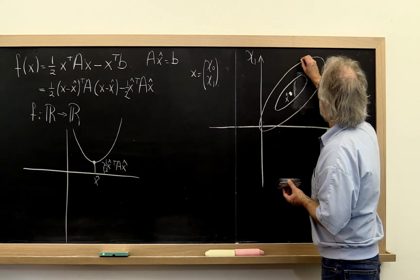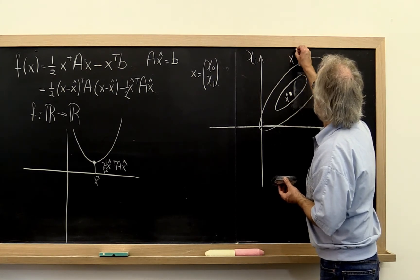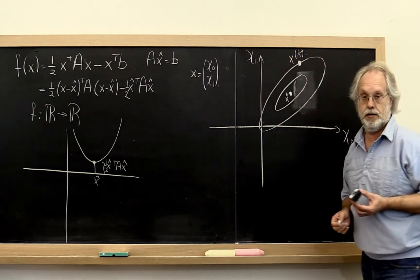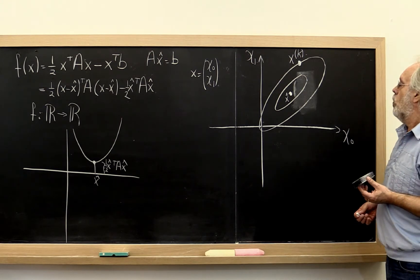And let's say that we have had some kind of method where at the current step we are at x super k, x^k. Okay? What we can do?